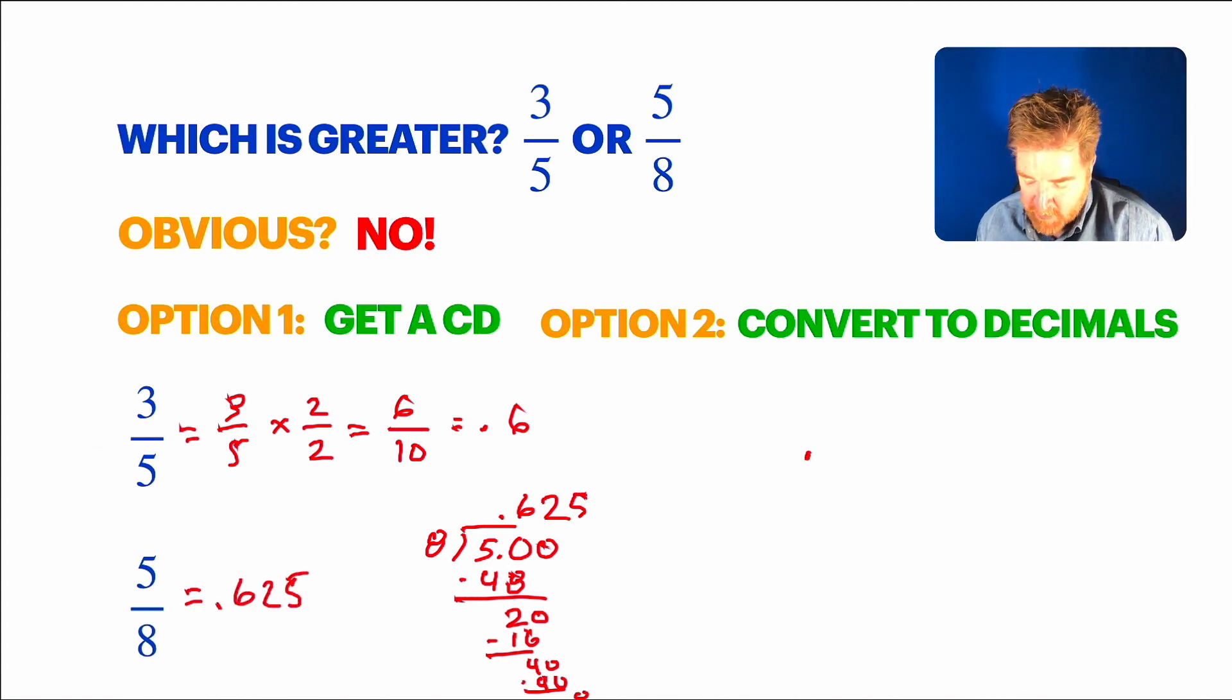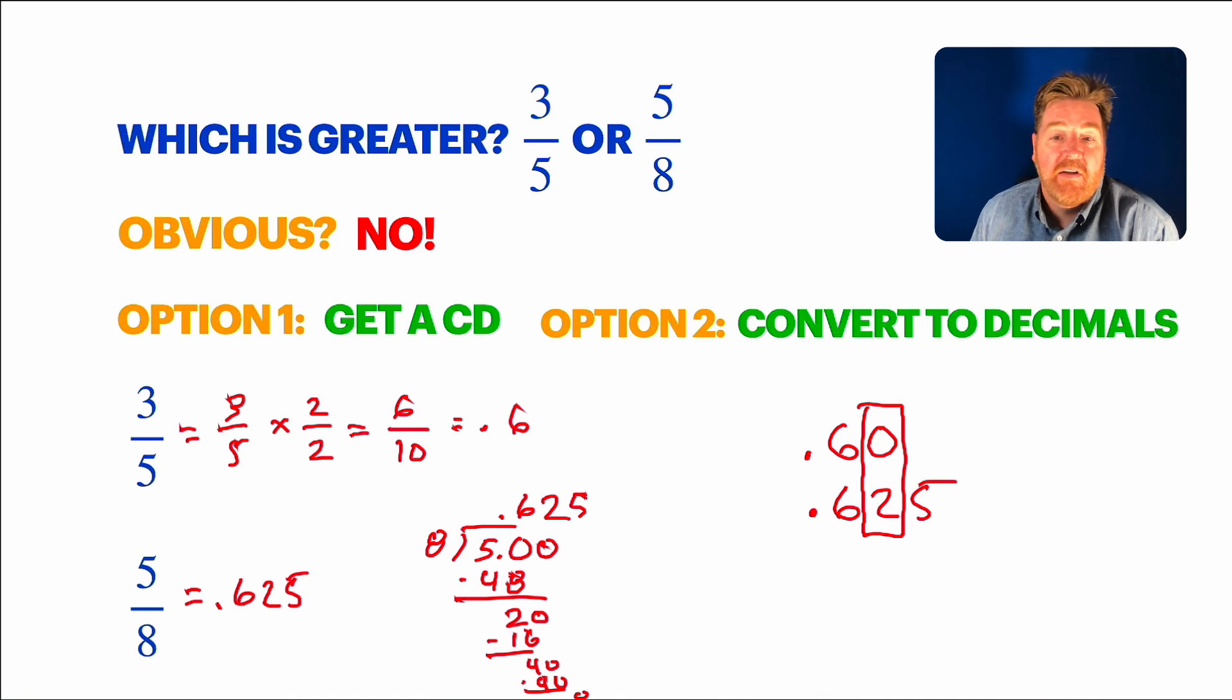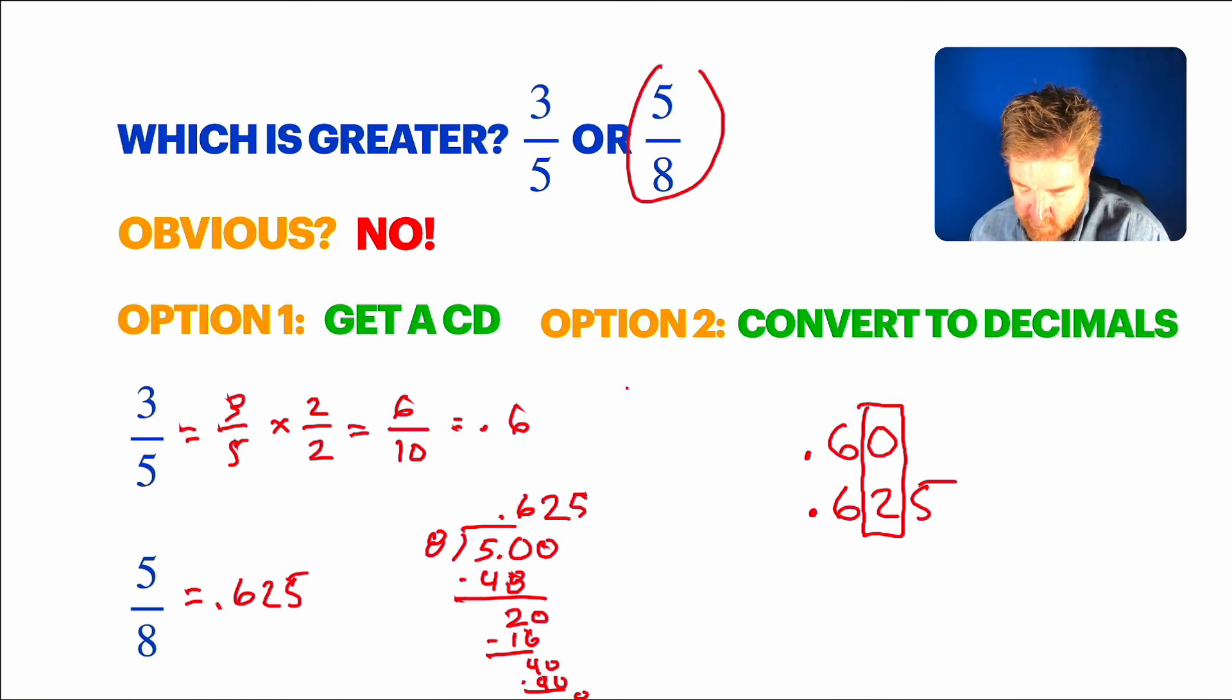So, this is what I meant. If we just line up the two decimals, it's pretty obvious now, especially if I drop in a zero right here. Look at this. In that hundredths place, the 2 is bigger than zero, so therefore, 0.625 is bigger. In other words, 5/8 is bigger. Looking okay?